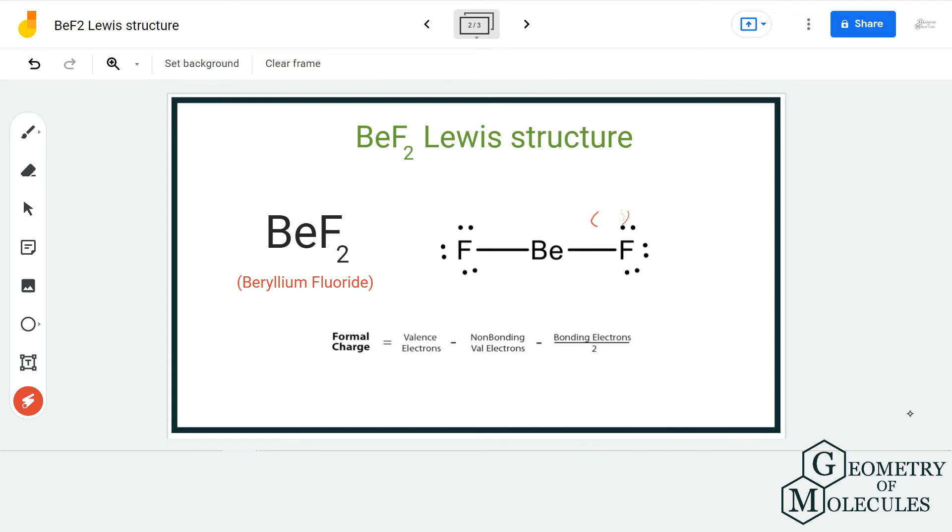And it's fine if it has four valence electrons in its outer shell because it is an exception to the octet rule and hence it can do with only four valence electrons. So this is the Lewis structure of BeF₂ in which beryllium forms two single bonds with two fluorine atoms.